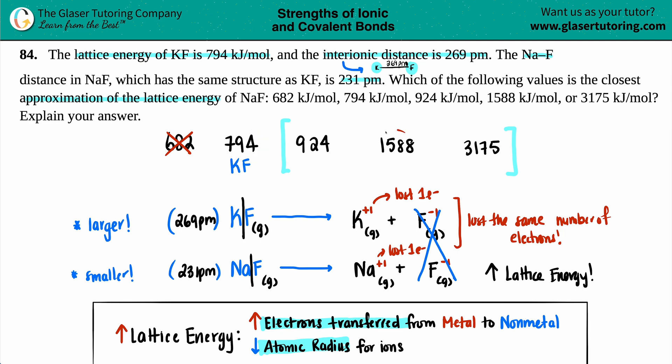the 794 to the 1588 jump, that's kind of like two times the amount. But we lost the same electrons, so we can't jump that high.